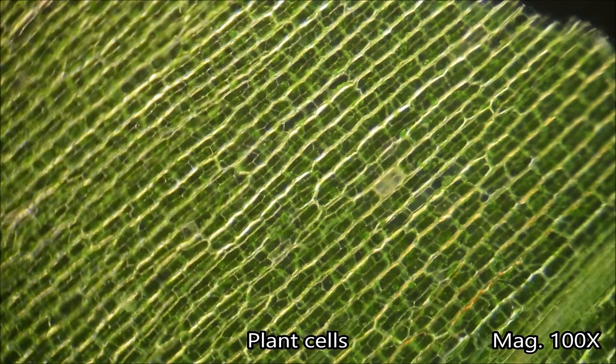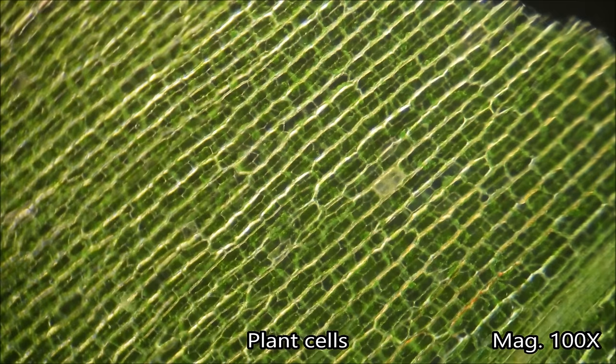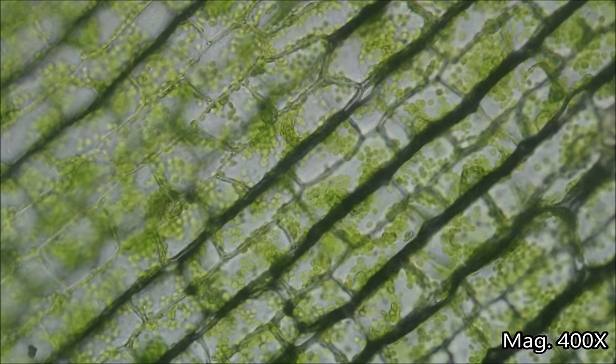This is done by an organelle in cells called chloroplasts. We can see them moving inside these plant cells. They are the green round structures seen here.